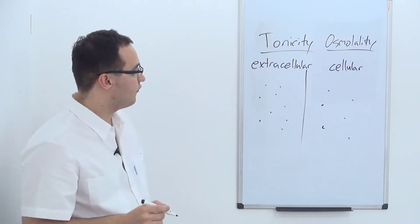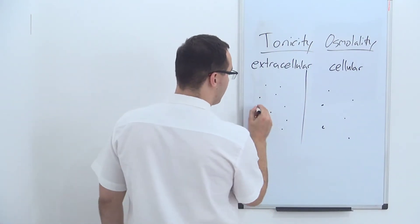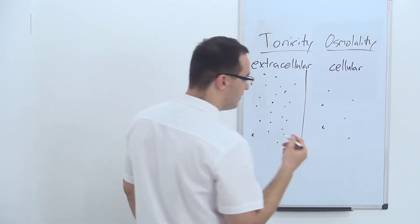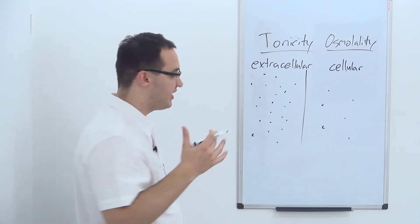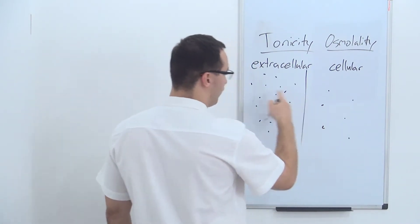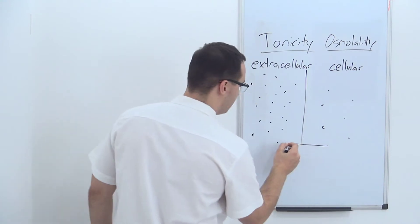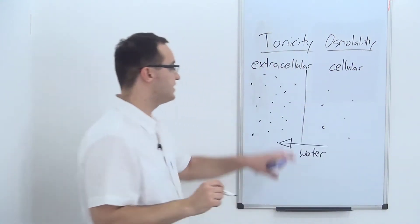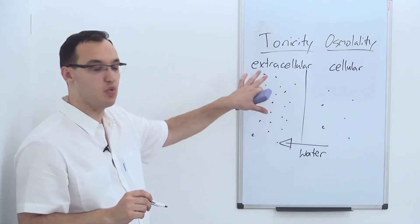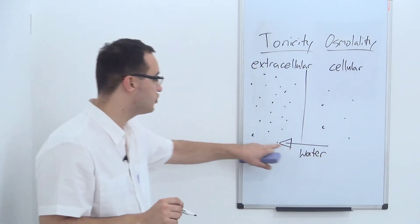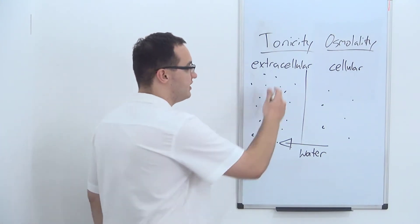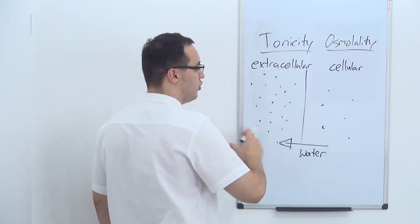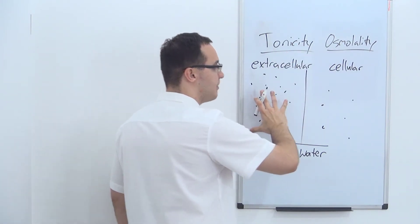If we have more solutes outside — in the extracellular space — then the water will tend to move toward the side which has more solutes, so water will move in that direction. We call this hyperosmolality: the osmolality outside is larger than inside the cell because you have more of these solutes.